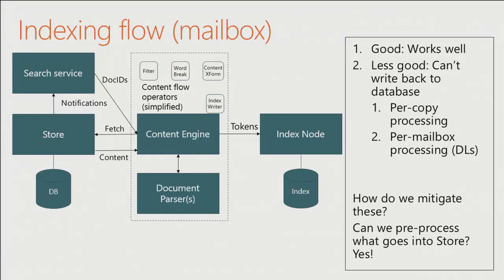The good part about this flow is it works reliably. However, you can't write back to the database in this flow, which means information has to be processed individually on each copy. In Exchange Online with four copies, content would be processed four times. Additionally, because notifications fire after DL expansion, if information is sent to a DL and delivered to individual mailboxes, each mailbox has a notification that has to get processed separately.